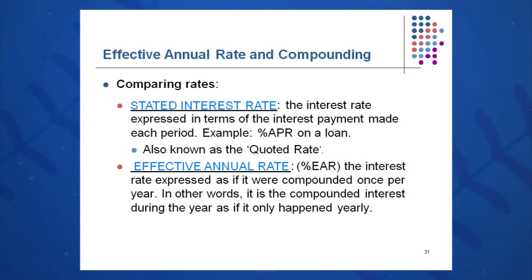Let's compare rates. The stated interest rate is the rate expressed in terms of an interest payment made each period. Typically, you'll get this from the bank—they're required by law to state the APR on a loan. They may say 8% compounded monthly. Your antennae should go up, and you know that stated rate or quoted rate is not what you're paying. It's compounded more frequently than annually, and you need to calculate the effective annual rate, or EAR.